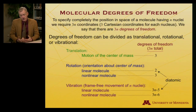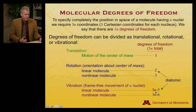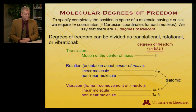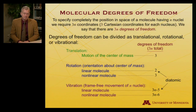Diatomics, which we dealt with up till now, are per force linear and have 3n minus 5 vibrations. So: 3 times 2 is 6, minus 5 is 1 — one vibration, which is what we looked at for a diatomic molecule. In a polyatomic there would be more. Let's pause here and think about the numbers of degrees of freedom available in different molecules.